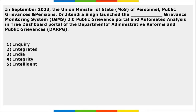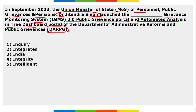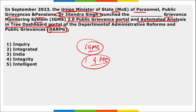Now moving to science and technology. Union Minister of State for Personnel and Public Grievances and Pensions, Dr. Jitendra Singh, launched the IGMS 2.0 — Intelligent Grievance Monitoring System — Public Grievance Portal and Automated Analysis Entry Dashboard Portal of DARPG. The full form IGMS stands for Intelligent Grievance Monitoring System. Dr. Jitendra Singh also launched Swachhata Special Campaign 3.0.